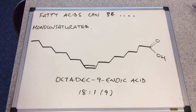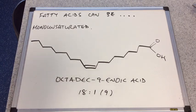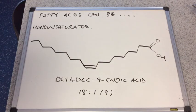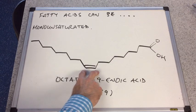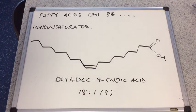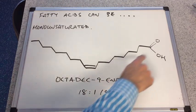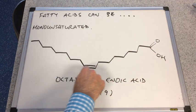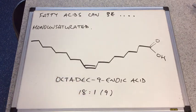So we'll look at a monounsaturated fatty acid now. It's got this lovely looking molecule here. It's called octadec-9-enoic acid. It's monounsaturated because it has one carbon-carbon double bond. And you can see that this is at carbon number 9. So 1, 2, 3, 4, 5, 6, 7, 8, 9.